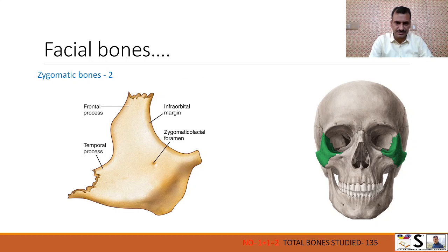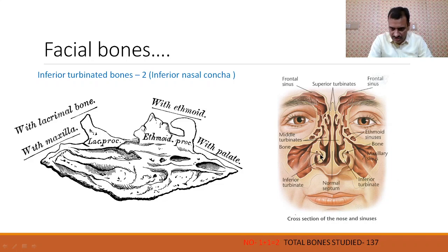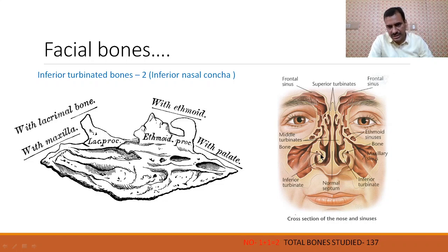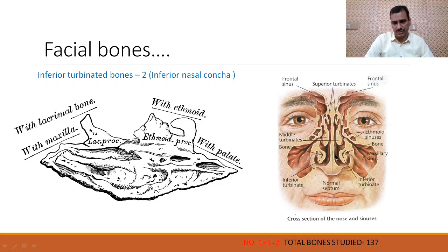Next bone is the inferior turbinated bone, also known as the inferior nasal concha. The inferior nasal concha is inside the nasal cavity — it is a small flat bone like a shelf inside the nasal cavity. There is one on the left side and one on the right side. Two inferior nasal concha bones are there. The middle and superior concha are parts of the ethmoid bone, but the inferior nasal concha is a separate bone.